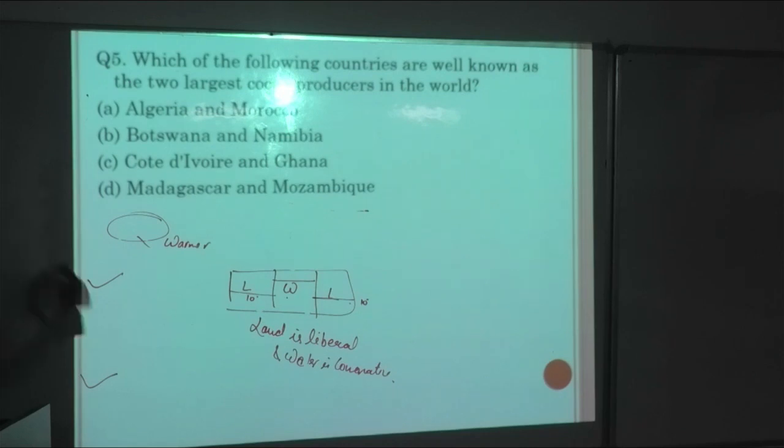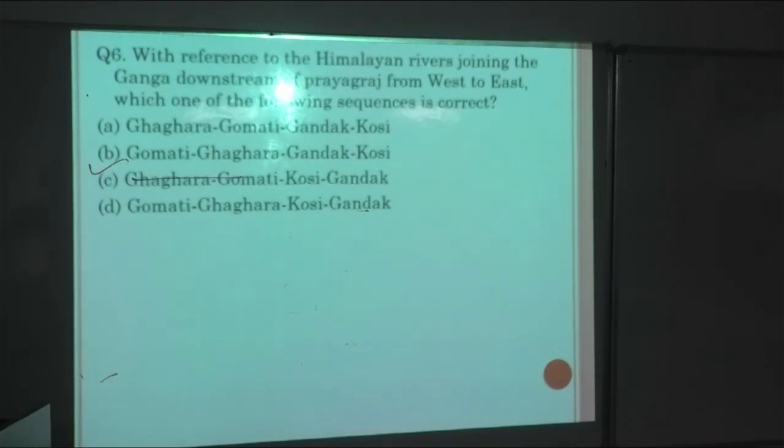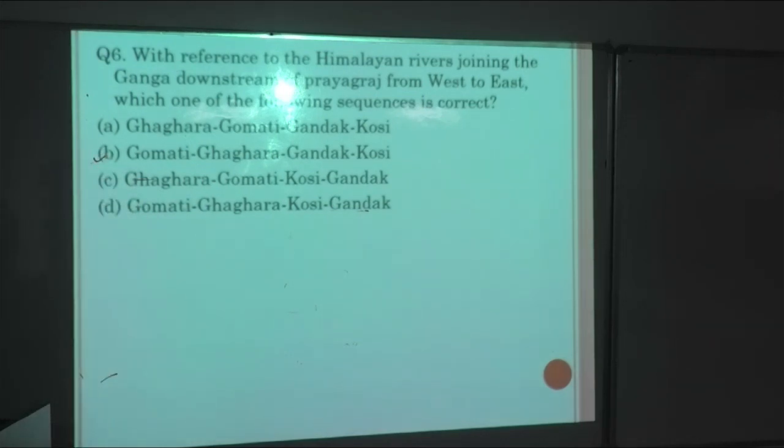Next question: Which of the following countries are known as the two largest cocoa producers in the world? Options: Algeria and Morocco, Ghana and Bolivia, Ivory Coast and Ghana, Madagascar and Mauritius. This is a very factual and direct question. Ivory Coast and Ghana is the correct answer. Next question: With reference to the tributaries joining the Ganga downstream of Prayagraj from west to east, which sequence is correct? Those who attended class, we had map work where we discussed which rivers start and end where. When the map-based classes are attended, it's very easy to tackle. The answer will be starting with Gomti and ending with that sequence.